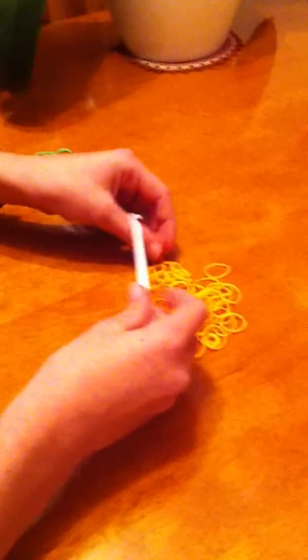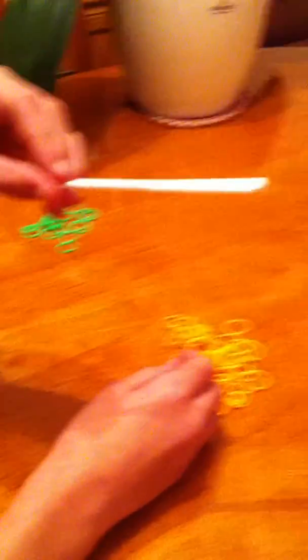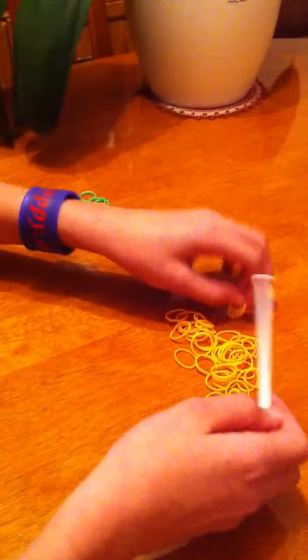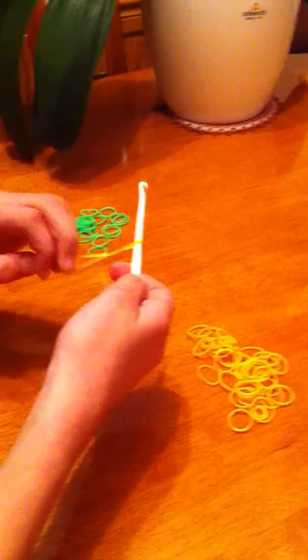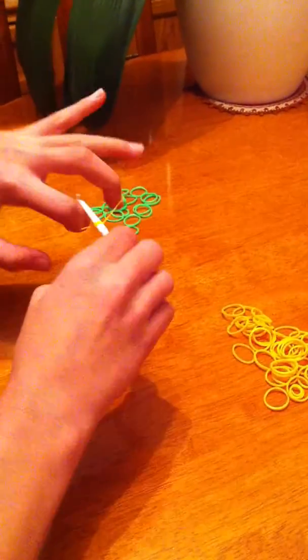To start off with, it's easier to use a little hook like this because you'll need lots of space on the hook. Get your first orange band and wrap it around your hook three times. This is your cap band.